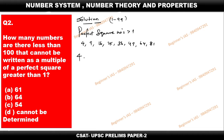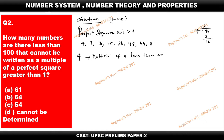First, let us find the multiples of 4 that are less than 100. The last multiple of 4 less than 100 is 96. Dividing 96 by 4 gives 24, so there are 24 multiples of 4 less than 100.